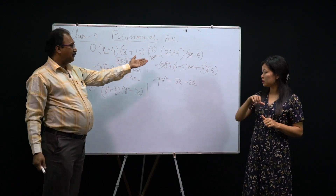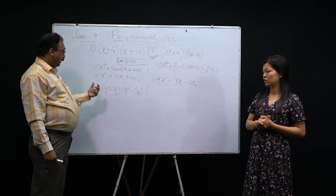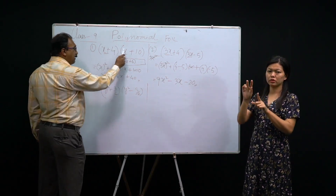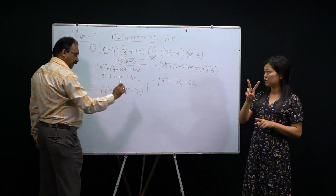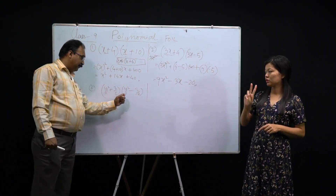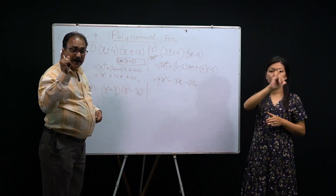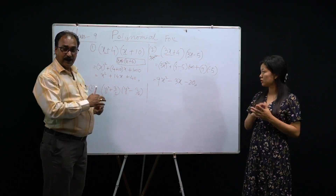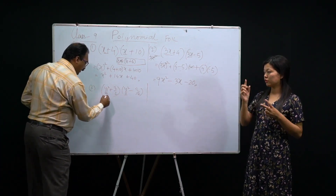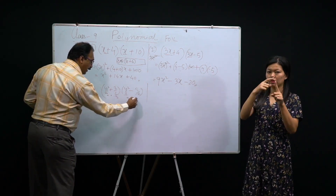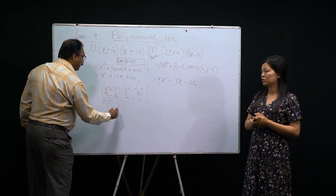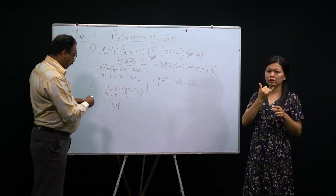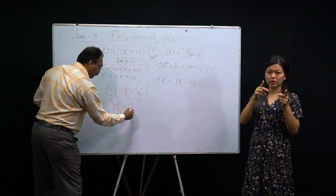Now look at this question — it looks like the same but it is not exactly the same. Here, the first terms are the same and the second terms are the same, but the only difference is their signs. So the formula to apply is: (a+b)(a−b) = a² − b². What is 'a' here? Here we have (a+b) and (a−b), so a² means... a is y², so a² means (y²)² — don't say only y square; a itself is y squared, so that also gets squared.